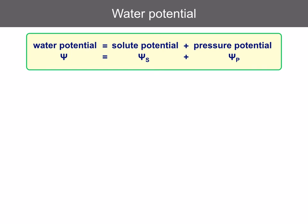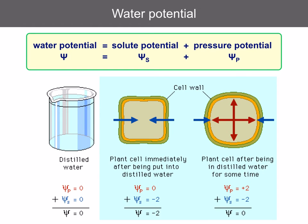You should remember the equation for water potential: solute potential plus pressure potential. The solute potential always has a negative value, and the pressure potential always has a positive value. If you put a plant cell in pure water, look at how the pressure potential values change — the pressure potential increases until eventually the overall water potential reaches zero, at which point no more water can enter the cell.